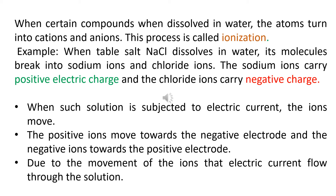When we allow electric current to pass through such a solution, there are many positive and negative ions in the water. Immediately these ions start moving — positive ions get attracted towards the negative side of the battery, and negative ions get attracted towards the positive side of the battery. This motion of ions results in an electric current flowing through the solution.